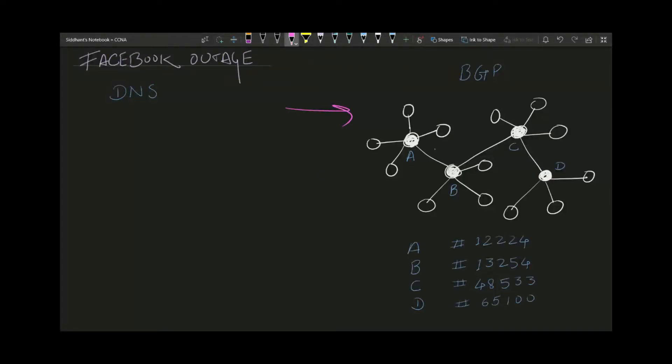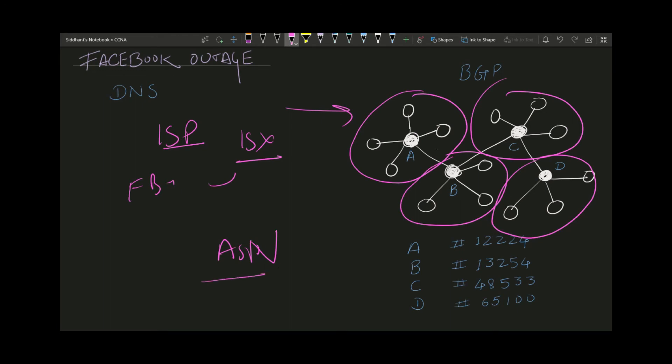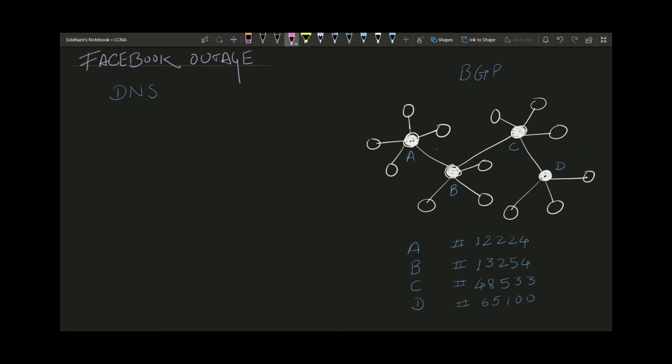It actually works like this diagram. This A, B, C, and D you can name as BGP routers. This is basically one autonomous system, second autonomous system, third autonomous system, and fourth autonomous system. Facebook will be having an autonomous system of its own. Big companies usually own some ranges of public IP addresses and some autonomous ranges or BGP routers. The ISP or ISX, which is Internet Service Exchange, will provide the ASN, which is Autonomous System Numbering. Suppose A has a number 12244, B has 13254, C has 48533. These ASN will be basically your routers, autonomous system numbers connecting the entire world.